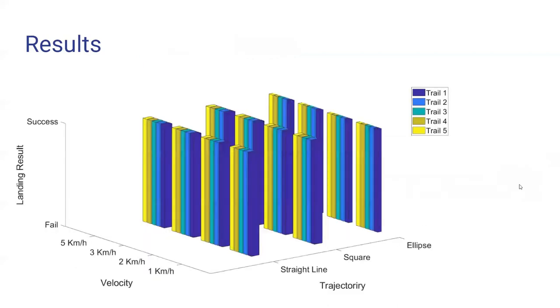In addition to that, to test the repeatability of the experiment, for each trajectory, for each velocity, we have carried out 5 trials for each trajectory and each velocity. You could see the results here that the trajectories along here, the straight line square ellipse, and velocities here, the 1, 2, 3, and 5 km per hour, and the 5 trials for each velocity with each trajectory. The success bar and failure bar here. And we could see that for all of these, for each trajectory and each velocity, for each trial, the agent UAV was able to successfully land on the base UAV, which can tell the robustness of this mechanism or method.